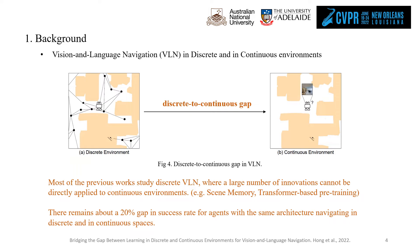Most previous work studied discrete VLN and focused on image-text matching, where a large number of innovations cannot be directly applied to continuous environments. There remains about a 20% gap in success rate for agents with the same architecture navigating in the two settings.